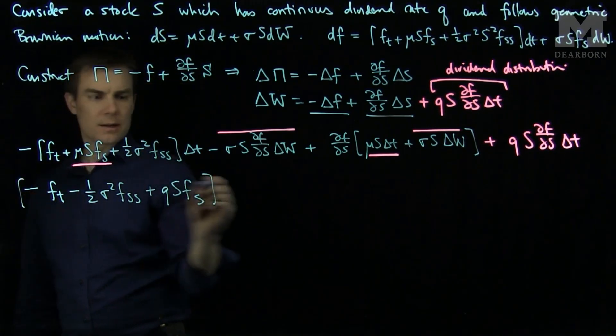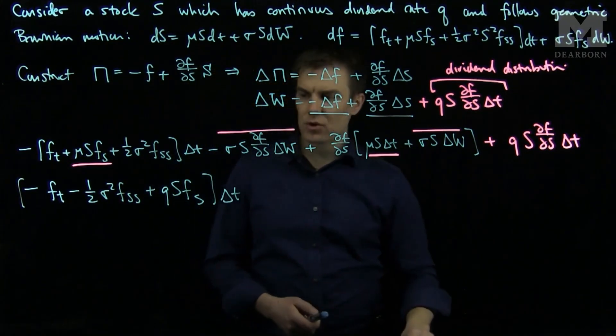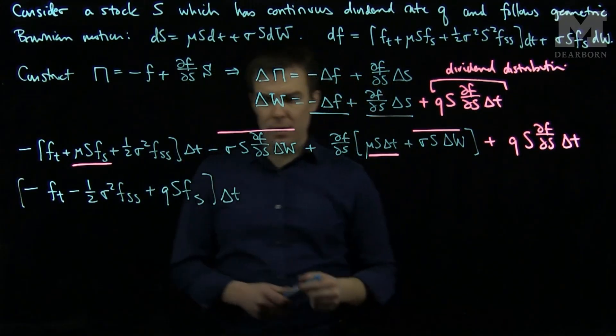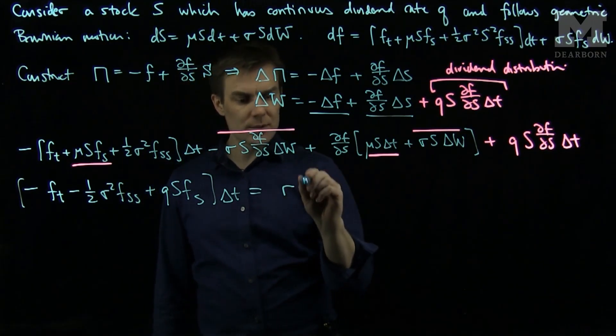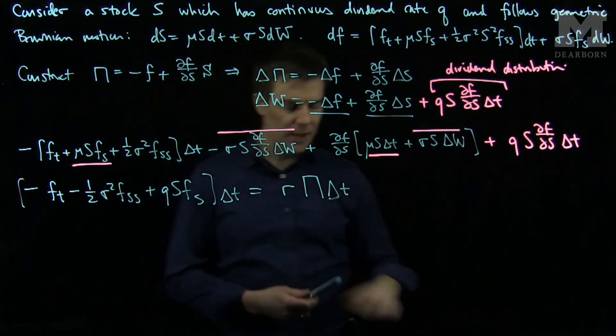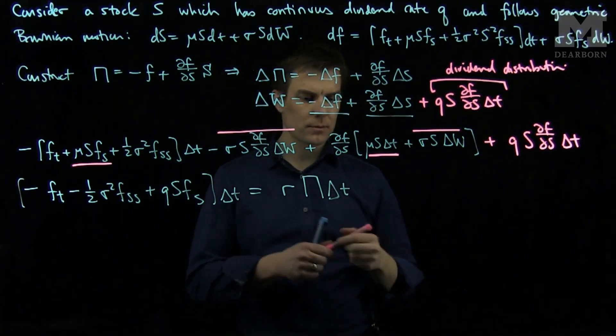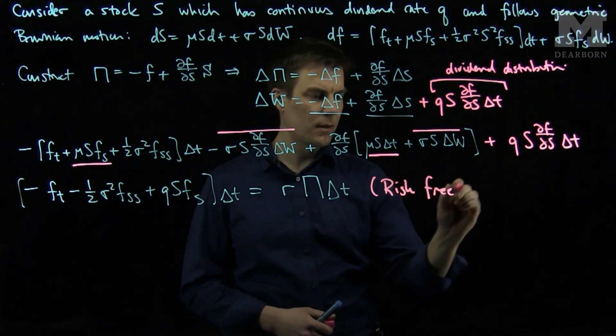These are all my delta t terms. Since there is no more randomness, this must be equal to r, the risk free rate of return, times the initial portfolio delta t. And this is my risk free pricing.